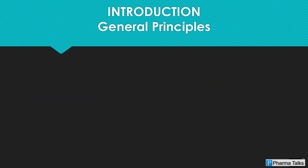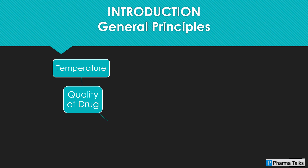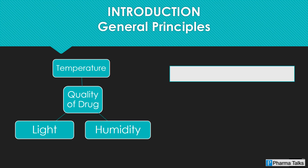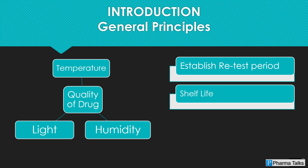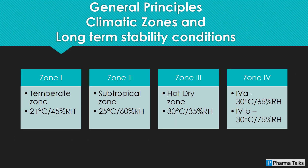The purpose of stability testing is to provide evidence on how the quality of a drug substance or drug product varies with time under the influence of a variety of environmental factors such as temperature, humidity, and light, and to establish a retest period for the drug substance or drug product. The world can be divided into four climatic zones, one to four. This guideline addresses climatic zones one and two.